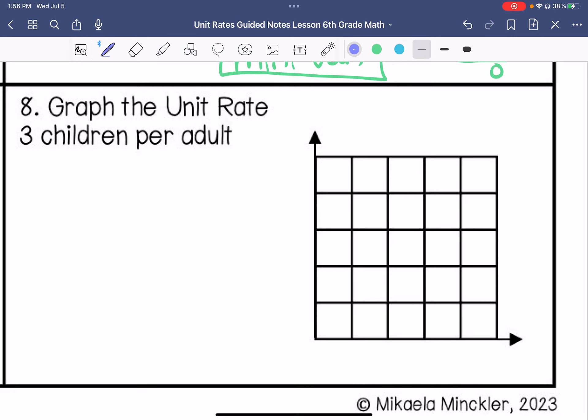And then this one says graph the unit rate three children per adult. So I'm going to put adults down here and then my y-axis is children: three, six, nine, twelve, fifteen. So three children per one adult, if there's two adults six children, three adults nine children, four adults twelve children, five adults fifteen children.